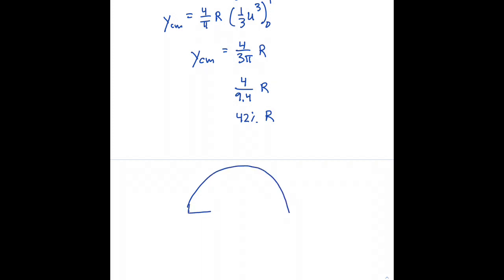So if we draw the picture once again, there's our semicircle and we're trying to figure out how far up from the base of our semicircle is that center of mass located and if this whole distance right here represents the radius then this is about 42%.